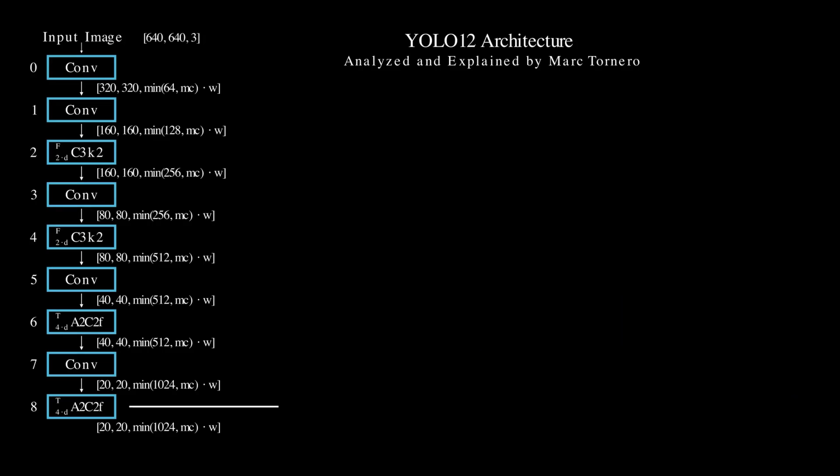Next, the NEC comes into play. This stage takes the features from the backbone and refines them for object detection. Upsampling operations integrate finer details from earlier stages, combining these with deeper, more abstract features using concat layers.